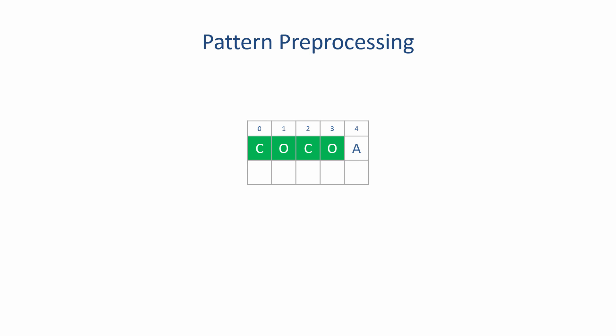Recall from the previous lesson what we did whenever we achieved a four-letter partial match — that is, a partial match containing everything up to and including index position 3 of this pattern. Ignore the rest of the pattern. The last two letters of this partial match are the same as the first two, so we reset the pattern pointer to index position 2. This partial match has a fail value of 2.